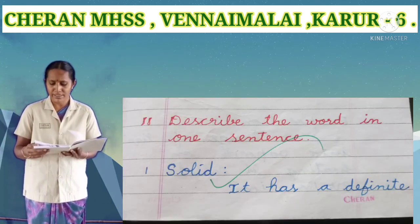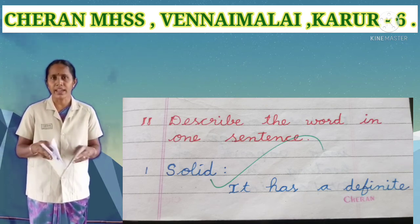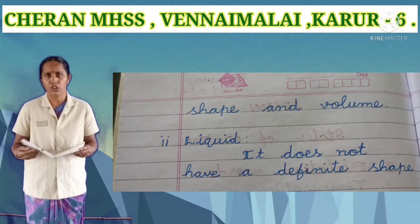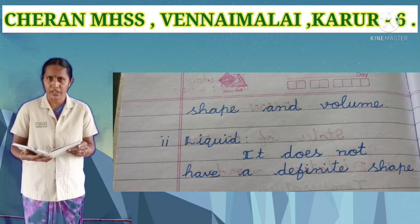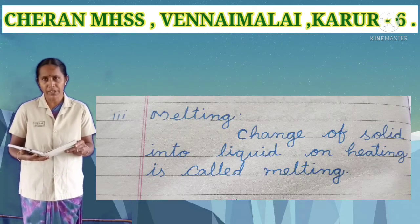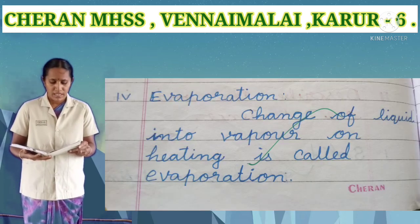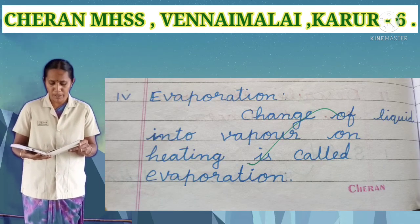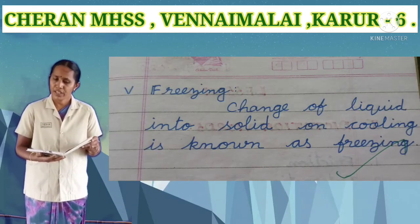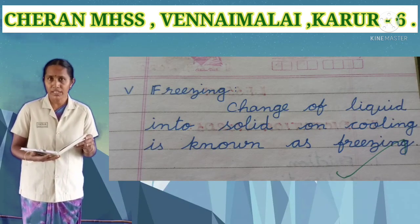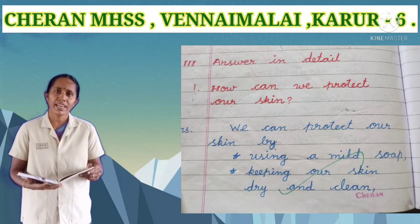Define the following and describe the state in one sentence. Solid: it has a definite shape and volume. Liquid: it does not have a definite shape. Melting: change of solid into liquid by heating is called melting. Evaporation: change of liquid into vapour by heating is called evaporation. Freezing: change of liquid into solid by cooling is known as freezing.